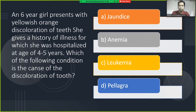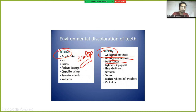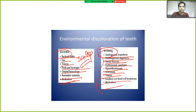A six-year-old girl with yellowish-orange discoloration of teeth, with a history of illness hospitalized at age four to five years — the cause is jaundice. Tooth discoloration can be extrinsic (removable by scaling, e.g., bacterial stains, iron, tobacco, food/beverages) or intrinsic (e.g., amelogenesis imperfecta, dentinogenesis imperfecta, dental fluorosis, internal hemorrhage, restorative material, or medications).